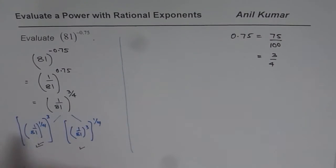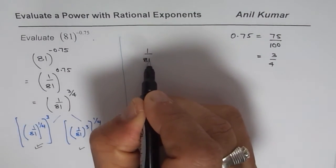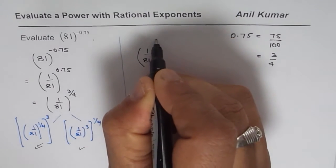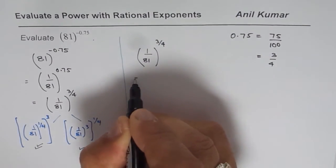So after this step, follow this. So basically, now we'll go from 1 over 81 to the power of 3 over 4.